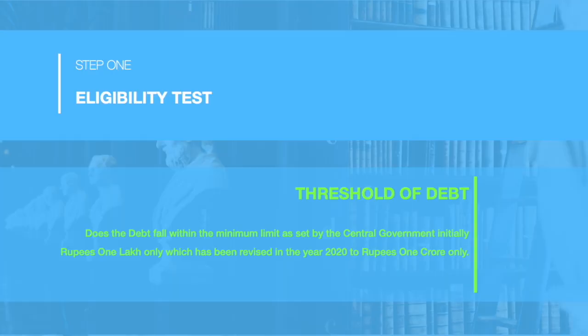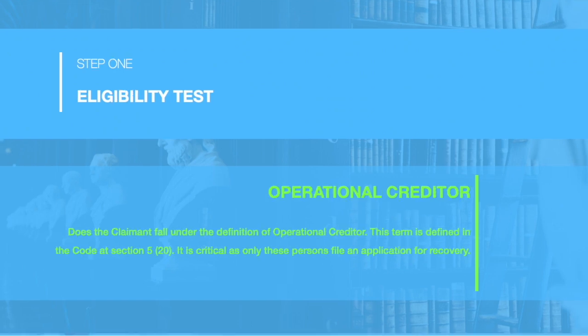The claimant — the person who is owed money, or the operational creditor in our case — requires to check the following. Firstly, whether the amount of the debt is above the threshold as prescribed under section 4 of the code. It must be kept in mind that this value is modified by the central government from time to time, which as on today is rupees 1 crore.